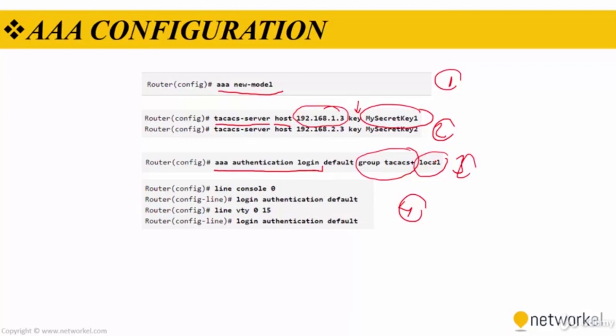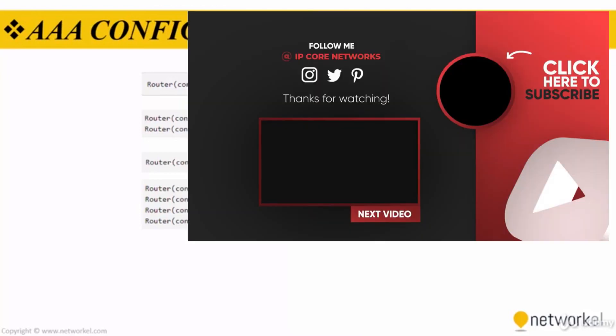In the fourth step, the default list for console and remote access is applied to the relevant lines. You enter line configuration mode using 'line console 0' for the console port and 'line vty 0 15' for remote access ports. The command is 'login authentication' followed by the name of the list.